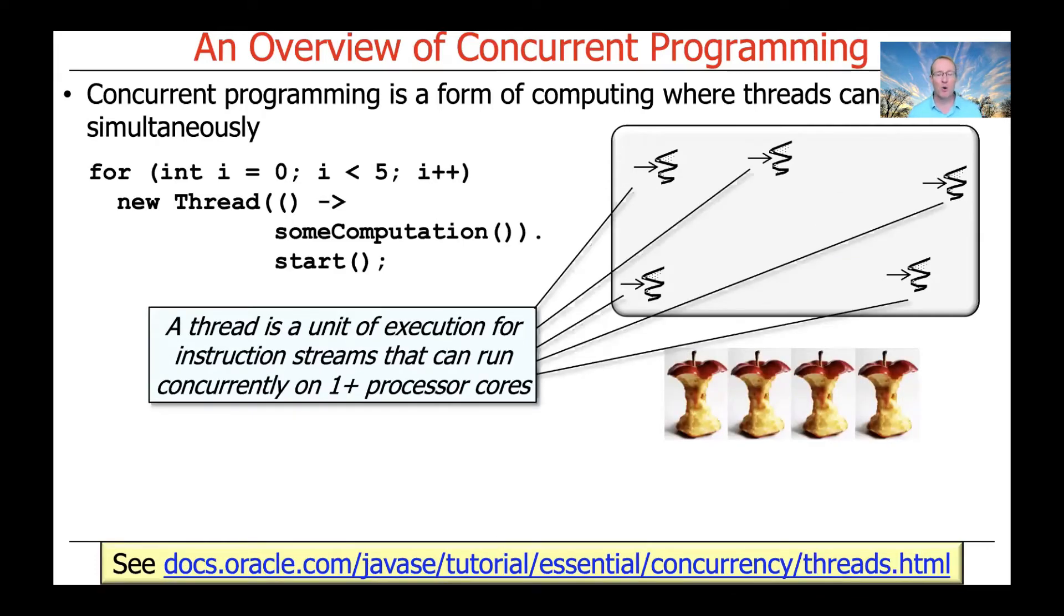Here's a very simple example where we're going to have a loop that iterates for i equals zero, i less than five. It's going to create a new thread and run some computation in each of the threads. What we show here on the right-hand side of the slide is a little round angle that's gray with five little squiggly thread-like things with little arrows indicating an instruction pointer where we're executing in that thread. What that defines a thread to be is as a unit of execution for instruction streams that can run concurrently on one or more processor cores. A given thread will be running on a given processor core at any given point in time, but over time, threads can move and run on different cores. The key point is a thread is a unit of execution, and it runs in the context of something called a process, and that gray piece there is the process.